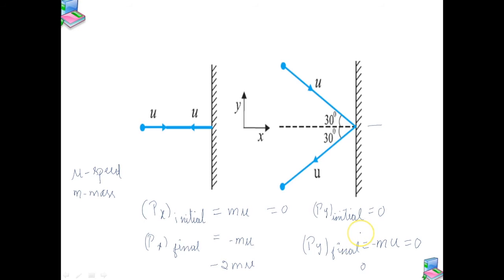Impulse and force are in the same direction. Clearly, the force on the ball due to the wall is normal to the wall along the negative x-direction. Using the third law of motion, the force on the wall due to the ball is normal to the wall along the positive x-direction. The magnitude of the force cannot be determined since the small time taken for the collision has not been specified.